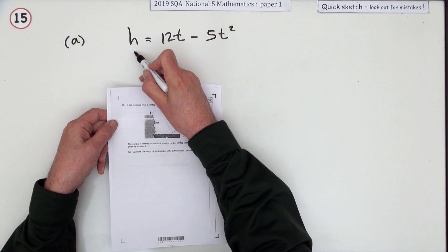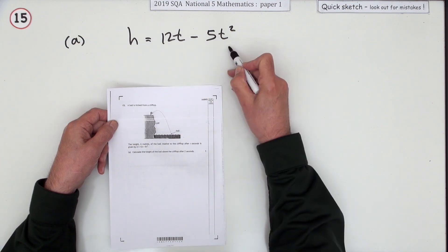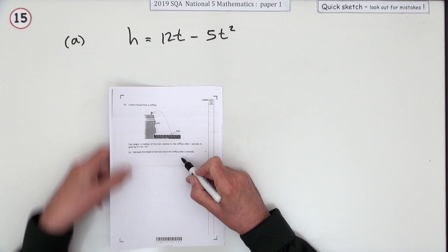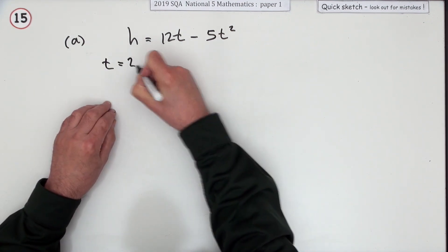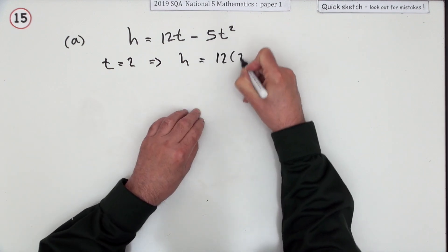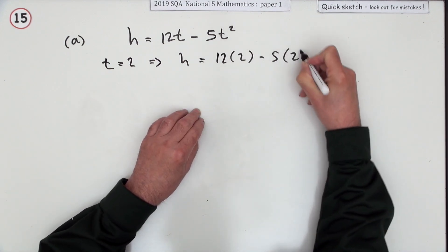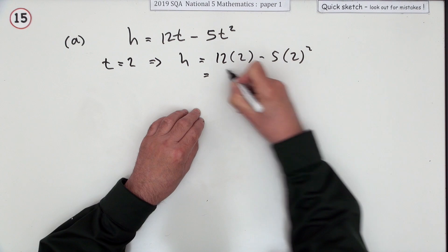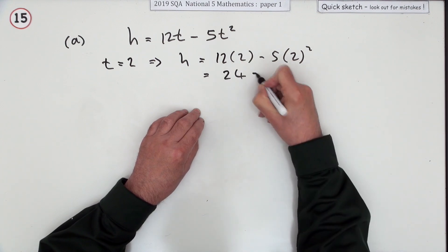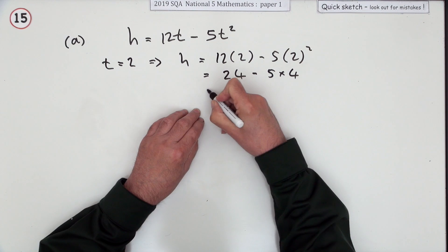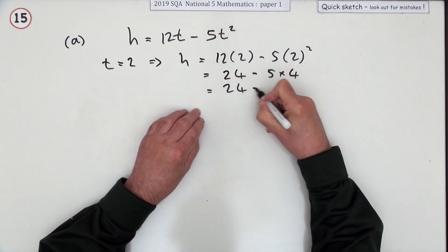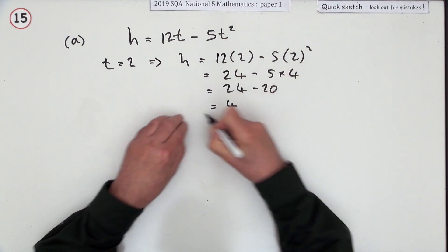The height h is given by this expression here: 12t minus 5t squared. Calculate the height of the ball after two seconds, just for one mark. Well, if t is 2, that means just put 2 into that formula. So it'll be 12 times the 2 minus 5 times the 2 squared, so that'll be 24 minus 5 times 4, minus 20, so that's 4 metres.